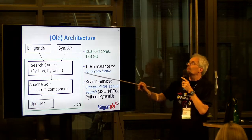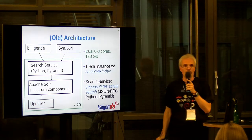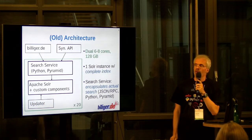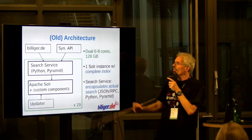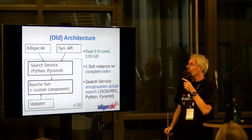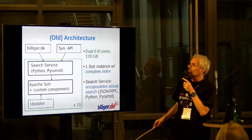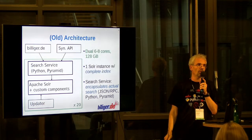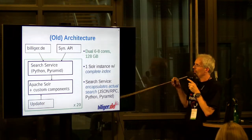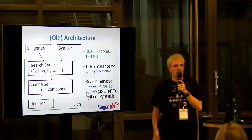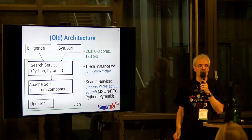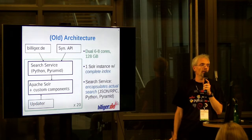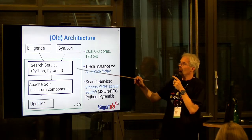The clients — the Billiger.de website and the syndication partner API — don't directly access Solr. They go through a JSON RPC service, the search service, which encapsulates the actual search. Python makes this look really nice — it looks like a normal local procedure call, but it's actually JSON RPC. The search service runs our standard company tech stack: written in Python using the Pyramid framework in an Apache and mod_wsgi setup.